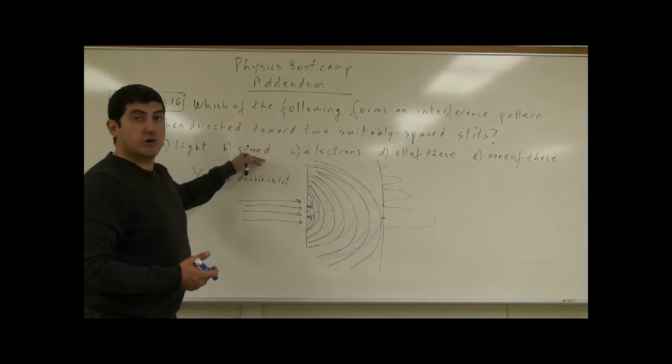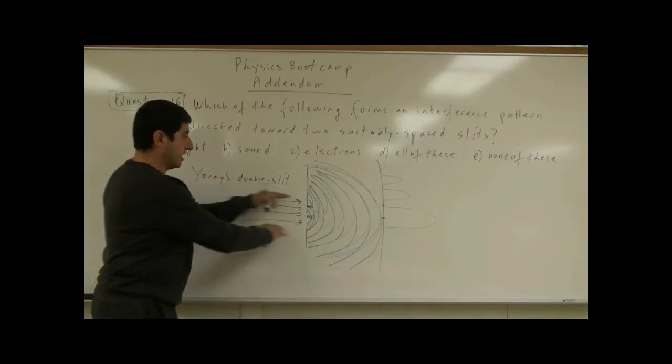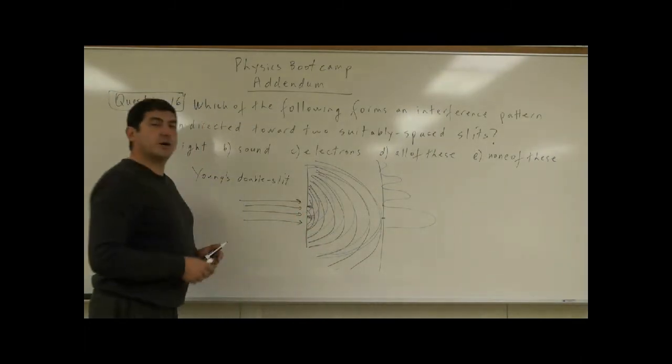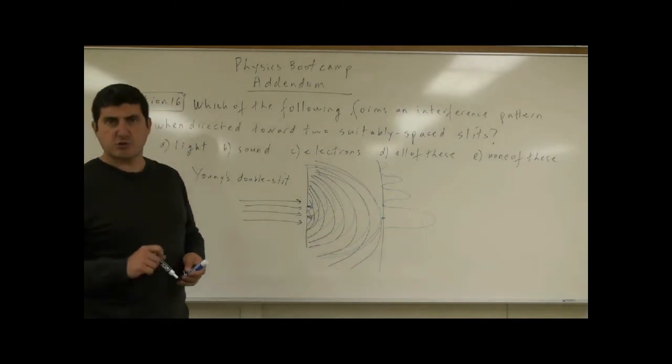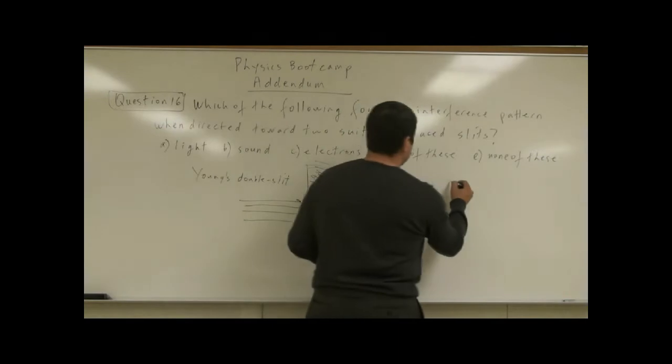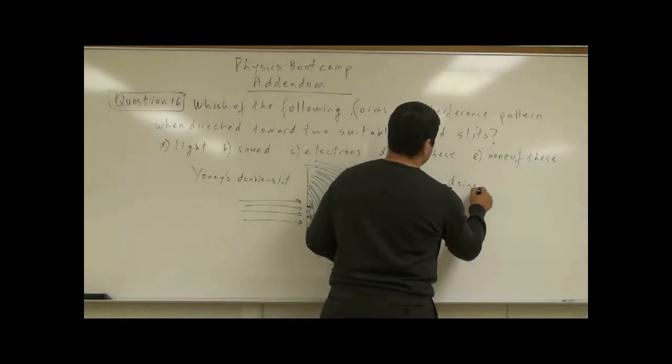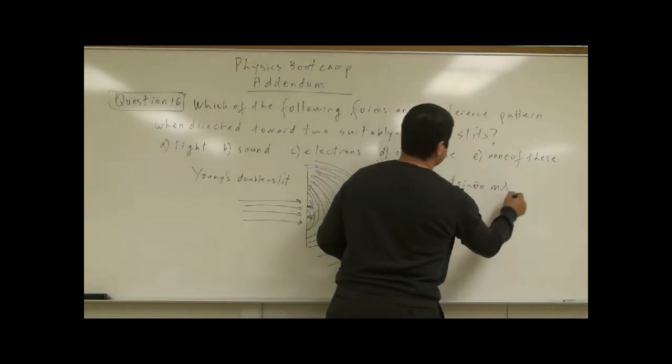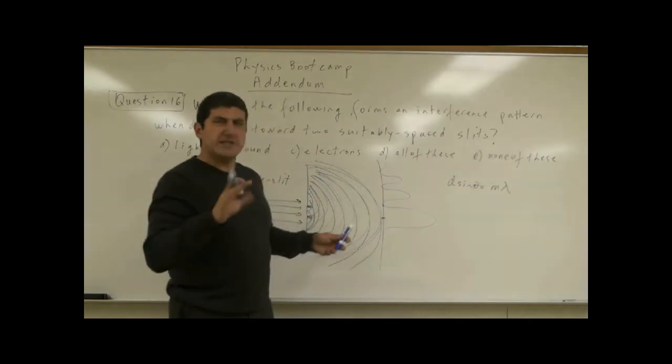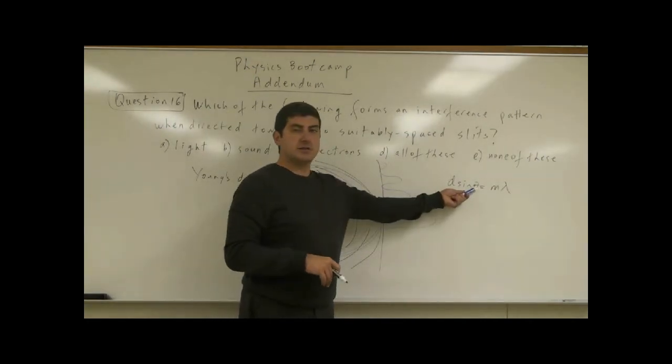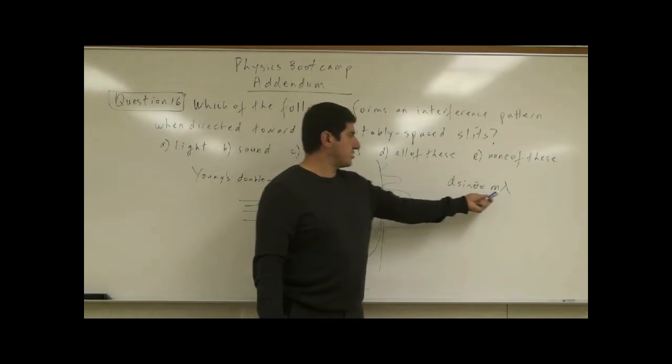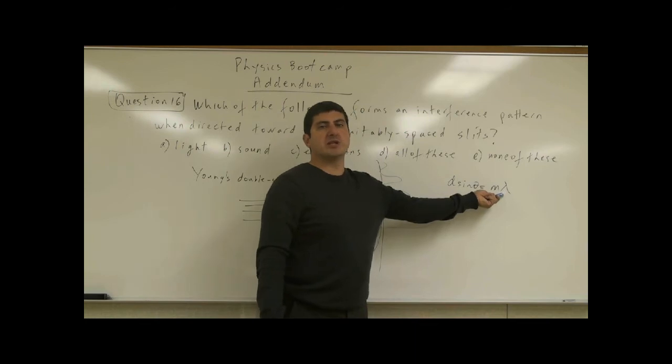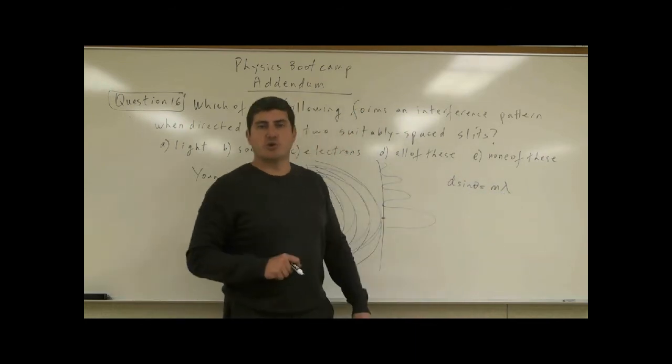Can that be true also of sound waves? How far apart should the two openings be spaced? From the equation of interference, we have D sine theta equals M lambda. Roughly speaking, in order for the angle to come out to be a decent angle, you want the distance between the slits to be an approximate multiple of the wavelength, of the same order of magnitude.